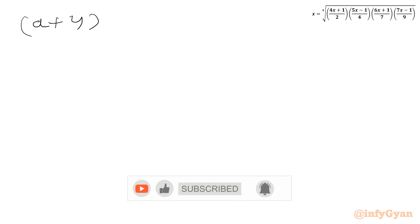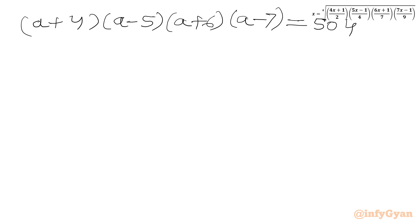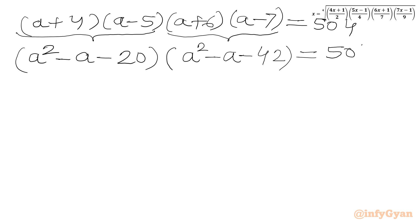Let's come back to our problem. The equation is (a+4)(a-5)(a+6)(a-7) = 504. Multiplying the first pair and the second pair: (a²-a-20)(a²-a-42) = 504.